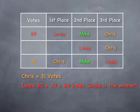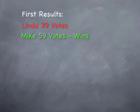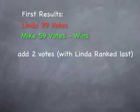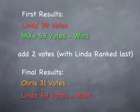Now, those two votes had Linda ranked last — third out of three candidates. Two votes with Linda ranked last, and yet putting those into the mix she is now the winner of this election. To recap: the first results had Linda with 39 votes and Mike with 59 votes and Mike won. Adding the two votes with Linda ranked last changed the whole election — Chris had 31 votes and now Linda had 69 votes and she wins.